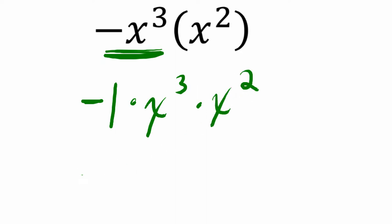Now if we think about what this really means, x to the third is x times x times x. x squared is just x times x.